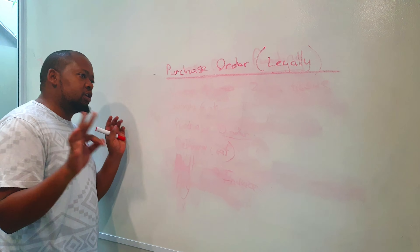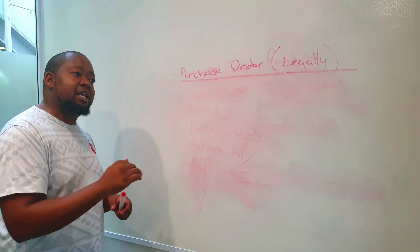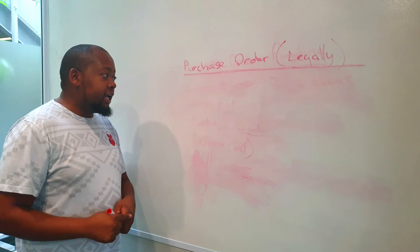In the first video we discussed basically what the process of a purchase order is. Now we'll discuss what a purchase order is legally, which is very important. Primarily what happens in a large company or a federated company — a company that has lots of divisions — is that to manage the process of buying goods from suppliers, they use a system which has purchase orders.